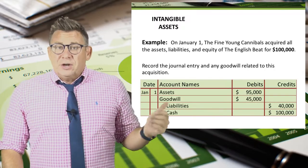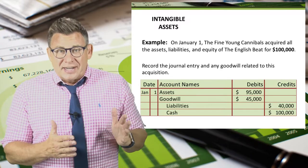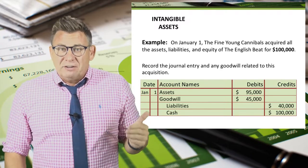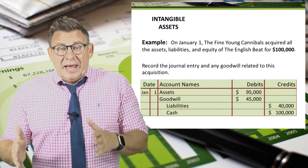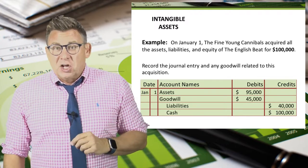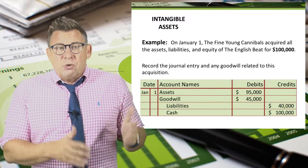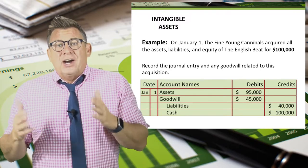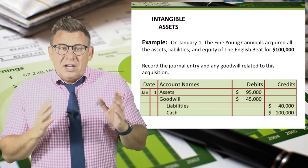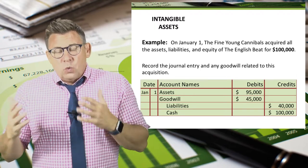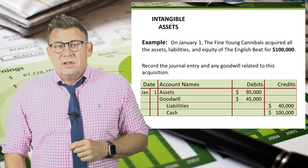The journal entry is a debit to the newly acquired assets for the fair value of $95,000, a debit to the new intangible asset called goodwill for $45,000, a credit to the acquired liabilities of $40,000, and a credit to cash for the $100,000 paid to purchase the company.